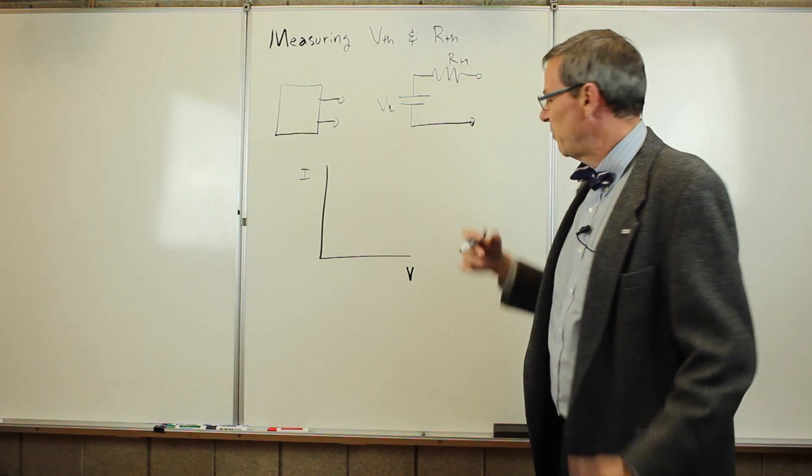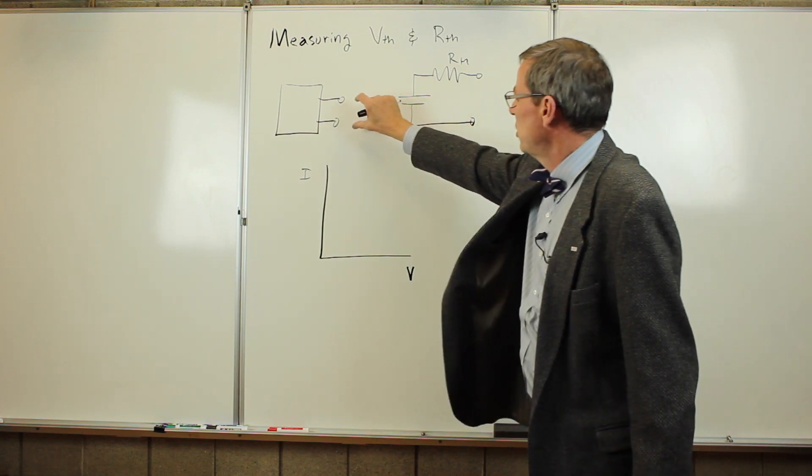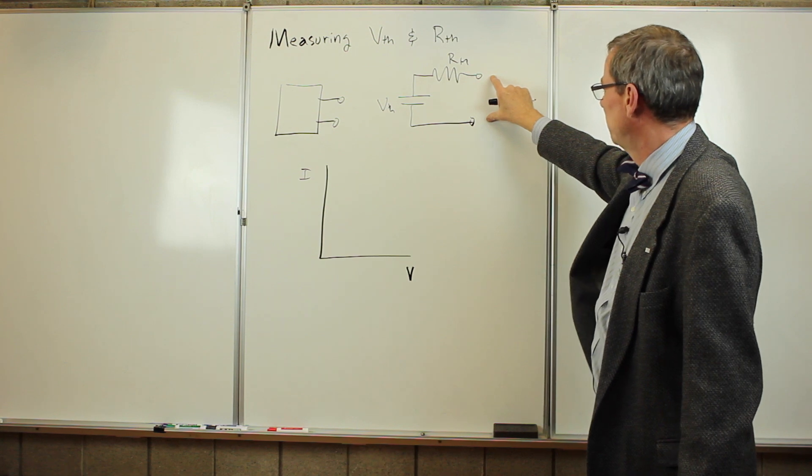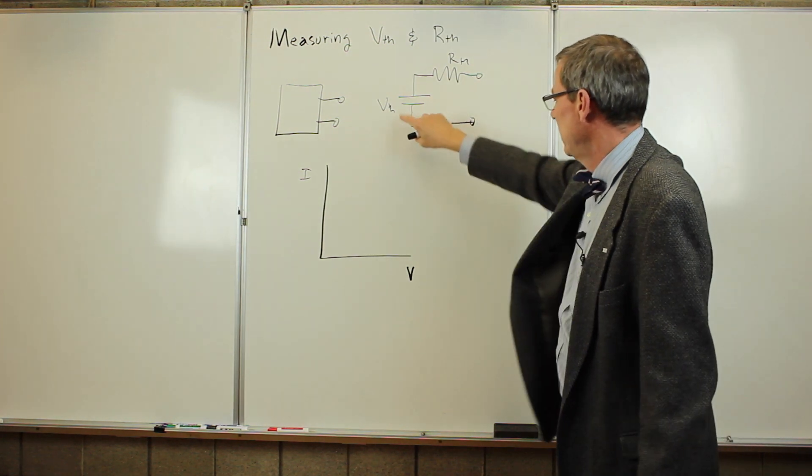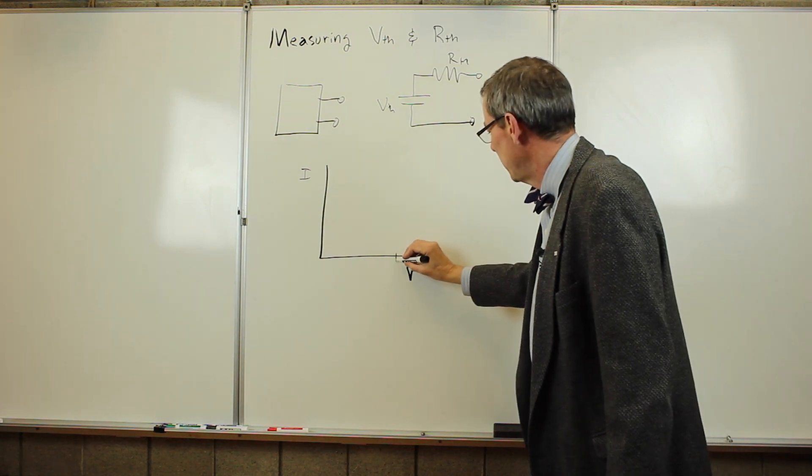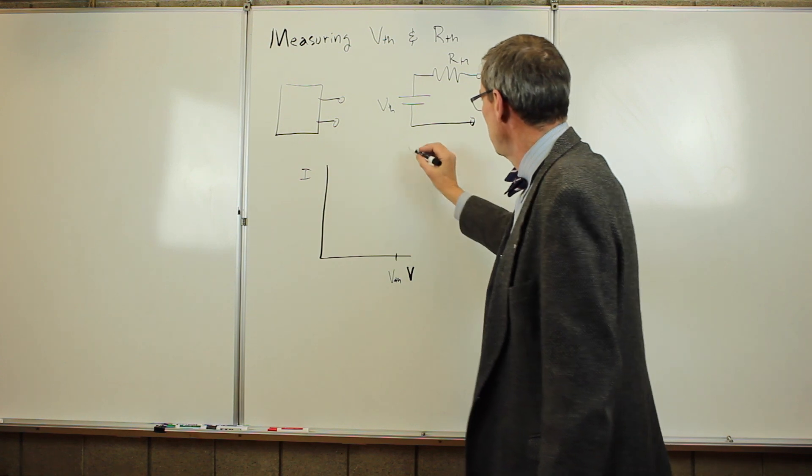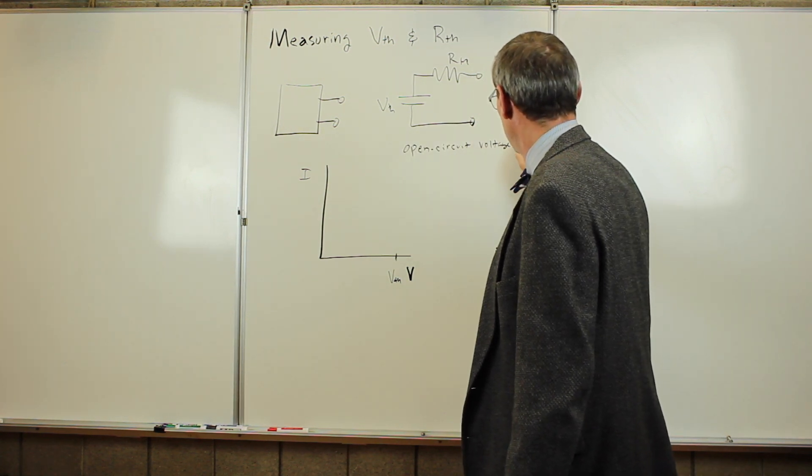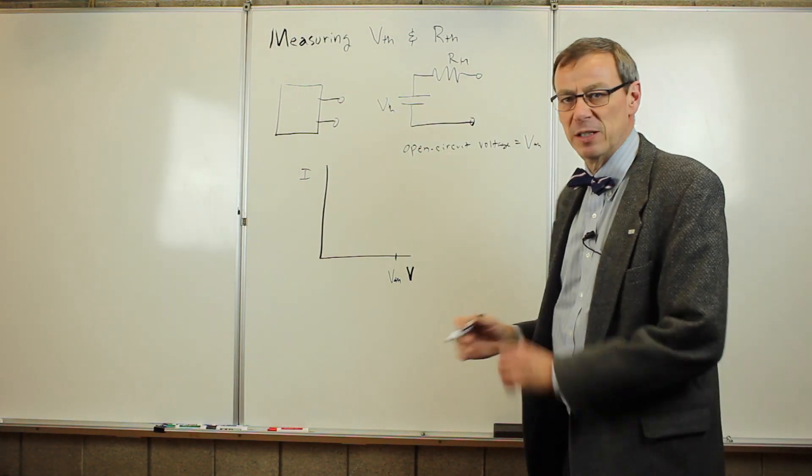When we first talked about this, there's a couple of things we could do. We know if we simply measure the voltage across these two terminals, it's equivalent to measuring the voltage across this. No current flows. So the voltage has to be V Thevenin. So there's going to be a point here, V Thevenin. So if we measure the open circuit voltage, that is the Thevenin voltage.